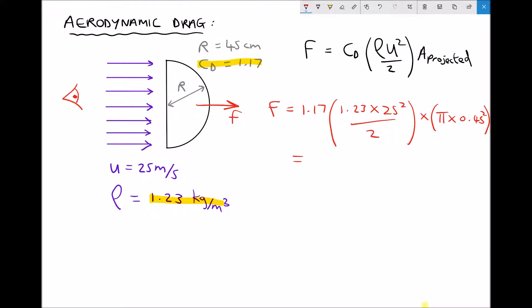So our area is pi times 0.45 squared. Running this through the calculator, we get 286.1 newtons. This is the force our solid hemisphere experiences from the wind when air flows normal to the flat side.